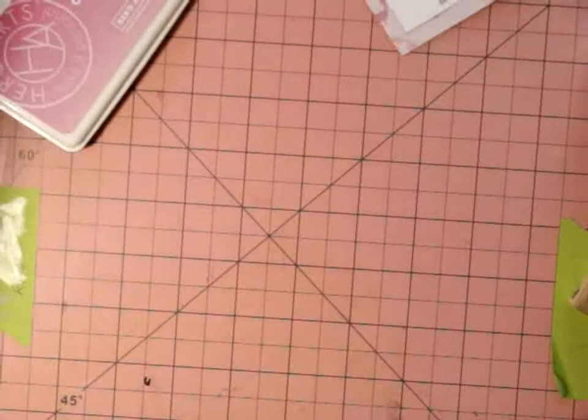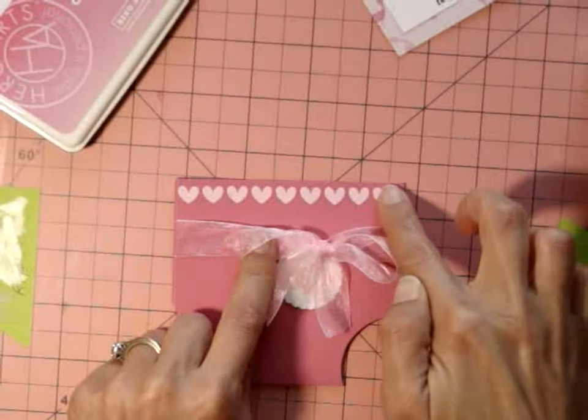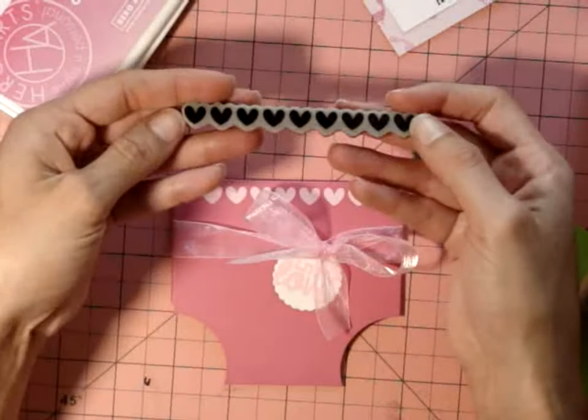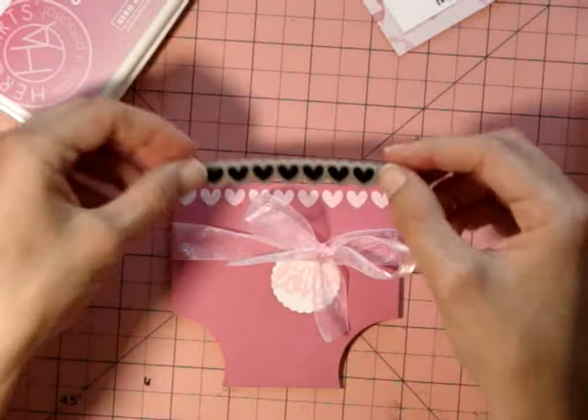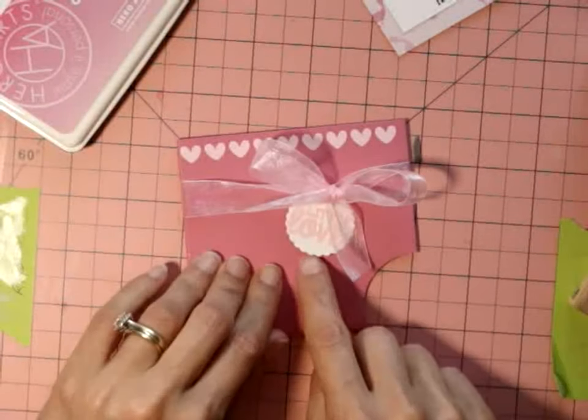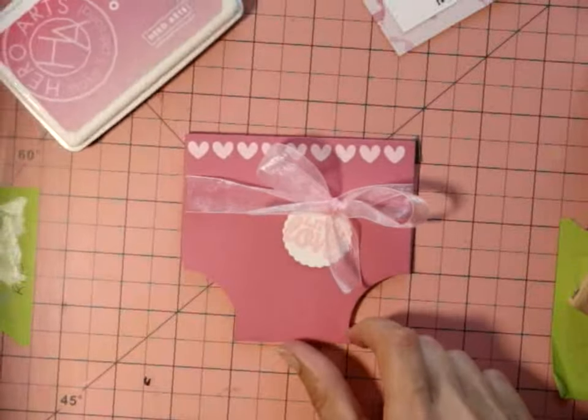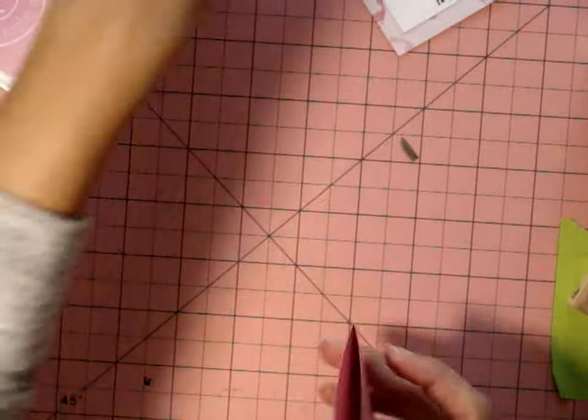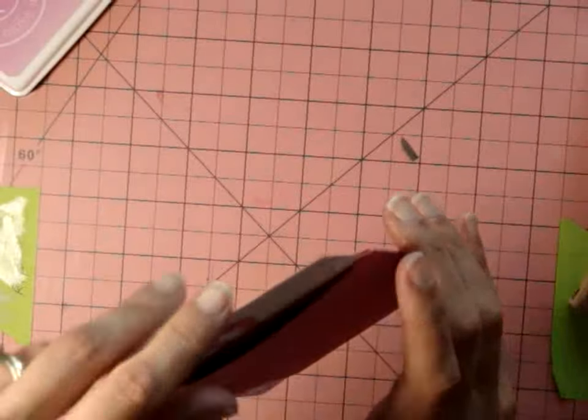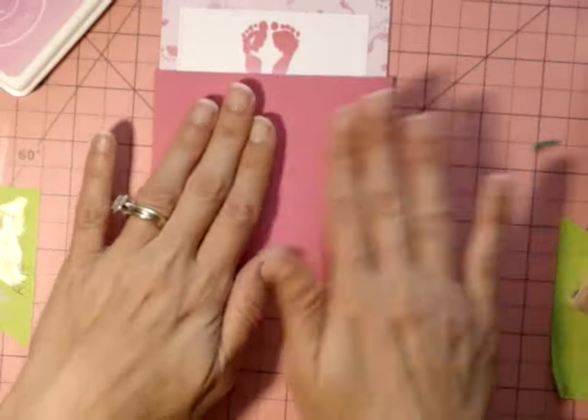Then I embossed with pink embossing powder the top layer, the top part of the diaper. Then made a tag. These are all things that you can do with whatever you already have on hand. Then tied the ribbon around it.